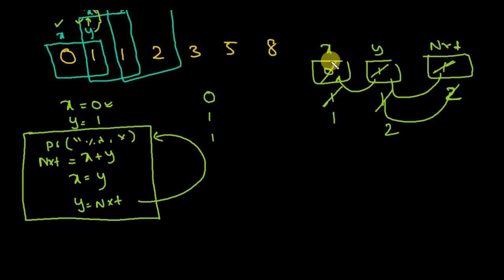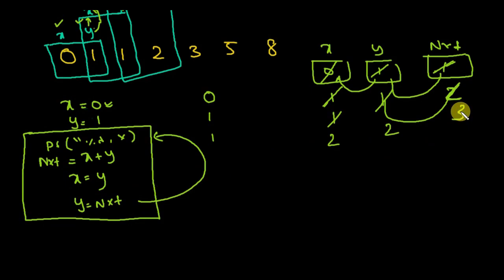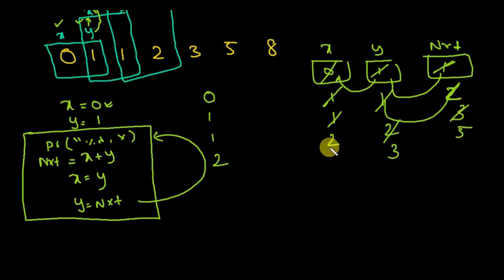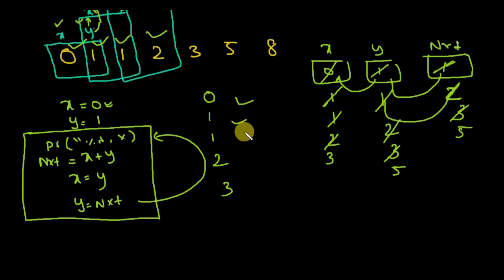Again, X plus Y: 1 plus 2 equals 3, stored in next. Y's value (2) is put into X, and next (3) is put into Y. Print X and get 2. Then X plus Y: 2 plus 3 equals 5, stored in next. Y's value (3) goes into X, and 5 goes into Y. You can see the pattern forming: 0, 1, 1, 2, 3 — this is how the Fibonacci series is generated.